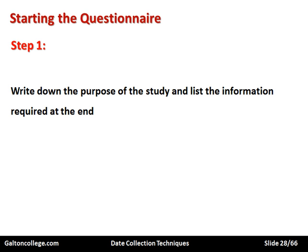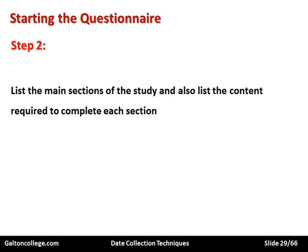Now, starting the questionnaire. Step one: write down the purpose of the study and list the information required at the end. Write down what's the purpose of the study and what's required at the end of that period. Without this information, nothing really happens. The purpose should be clear. For example, the purpose may be to investigate the effectiveness of marketing a particular product, and the information required at the end might be what improvements can be made to the marketing initiatives.